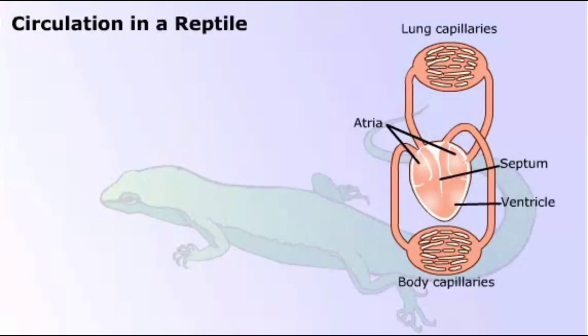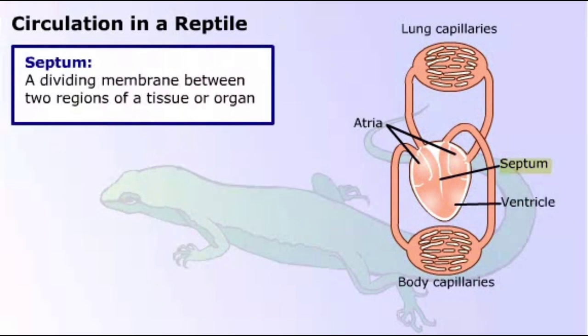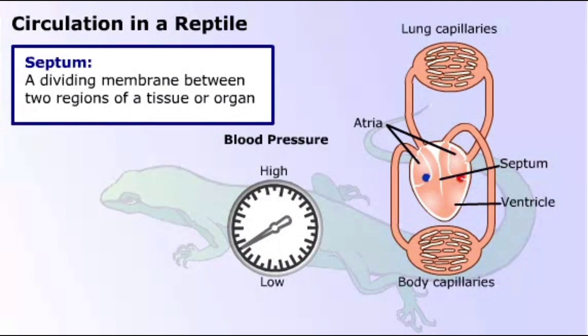This circulatory system belongs to a reptile. It is almost the same as the amphibian system, but note the wall, or septum, down the center of the ventricle. The septum helps prevent the oxygenated and deoxygenated blood from mixing, thus increasing the efficiency of the circulation. You can also see that the septum does not completely separate the ventricle into two chambers, so some mixing of oxygenated and deoxygenated blood could still take place.